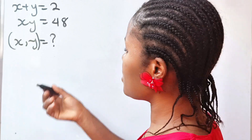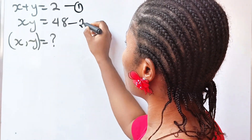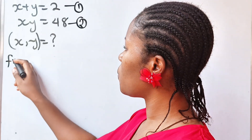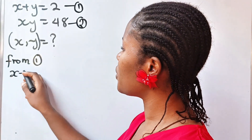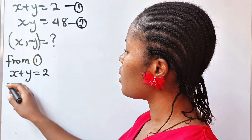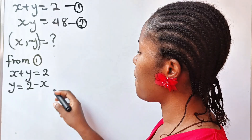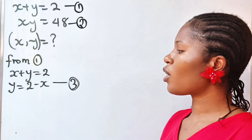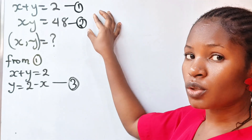First, let's call x plus y equals 2 as equation 1, and x times y equals 48 as equation 2. From equation 1, we have x plus y equals 2, which means that y equals 2 minus x. Let's call this equation 3. Now I'm going to substitute this into equation 2.